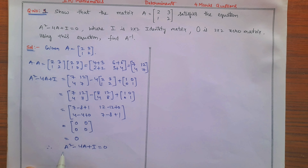Therefore A² − 4A + I = 0. The first part — proving the equation — is done for 2 marks. Now, using this equation, find A inverse.